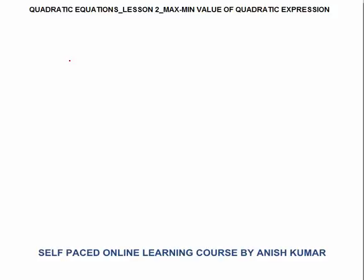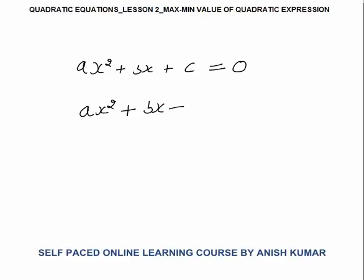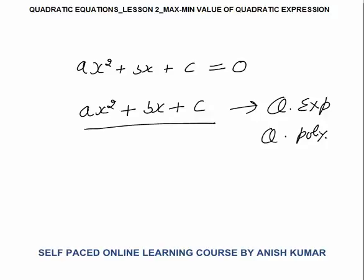Now this quadratic expression is different from a quadratic equation. When I say ax² + bx + c = 0, this is a quadratic equation because it is equal to 0, and we can't have a maximum or minimum value of an equation because equation itself means equals to something. Whenever we say maximum or minimum value, we are calculating it depending upon certain coefficients a, b, c in ax² + bx + c. This is the quadratic expression.